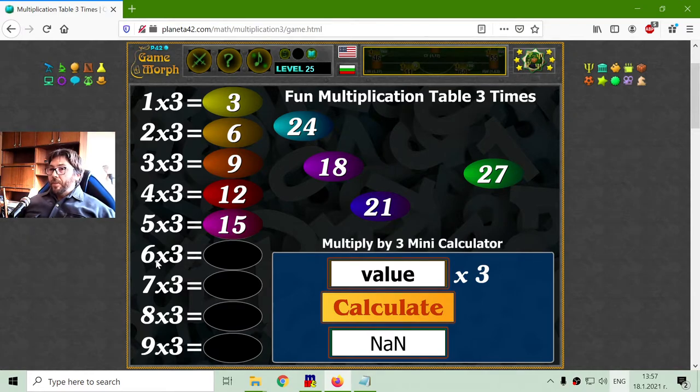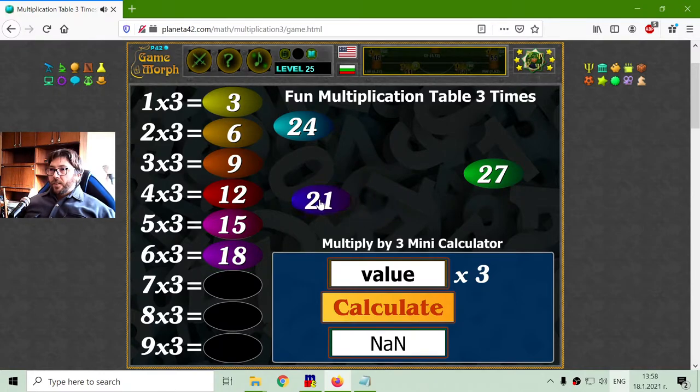Then we have 3 by 6 should be 18. This one, 21, is 3 multiplied by 7.